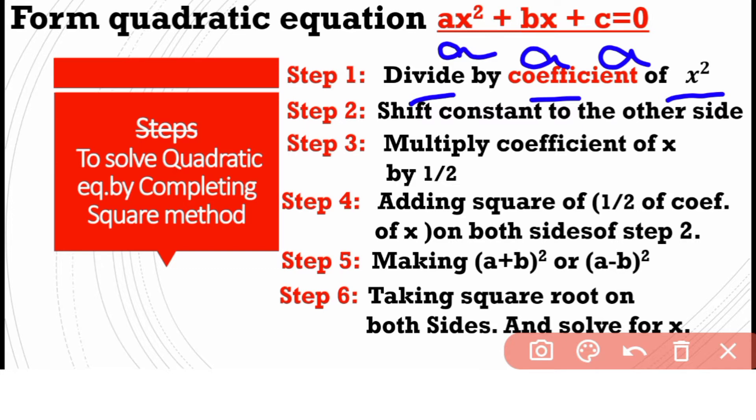Second step: shift constant to the other side. Here is the c that is on the left side. We have to move it on the right side, and there it will be negative, or any other value. If it will be negative, then it will be positive on the other side.